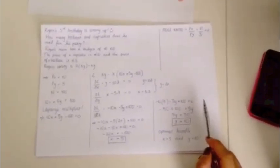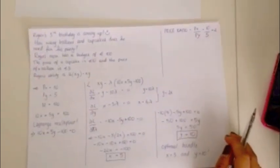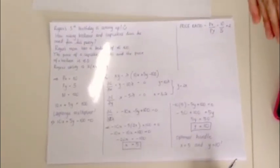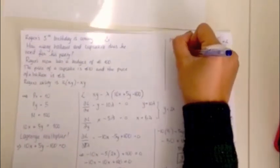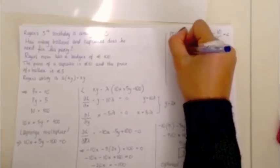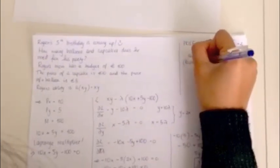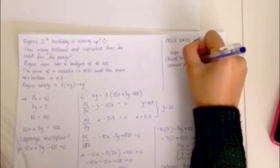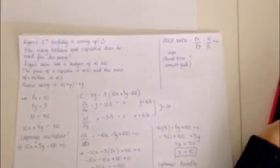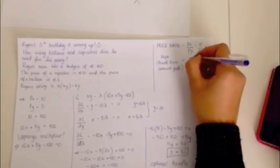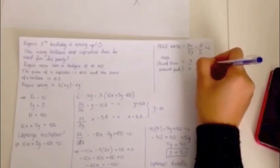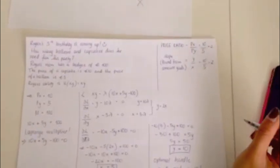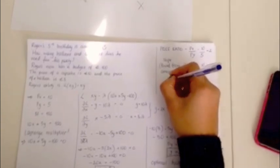However, we can also calculate the gradient of the budget constraint using purely the amount of good X and good Y that we have found, which is 10 over 5. That is Y over X, which equals 10 over 5, which therefore also equals 2. And therefore, it is shown that the marginal rate of substitution is equal to the optimal bundle.